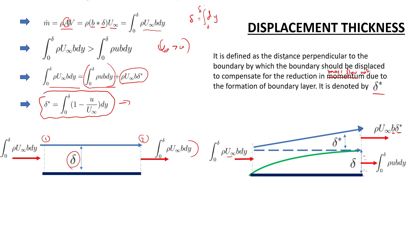It is defined as the distance perpendicular to the boundary by which the boundary should be displaced to compensate for the reduction in mass flow rate due to the formation of the boundary layer. It is denoted by delta star.